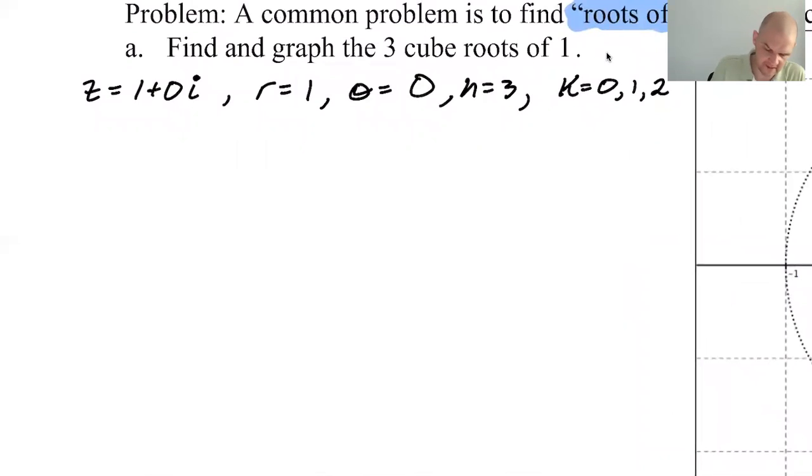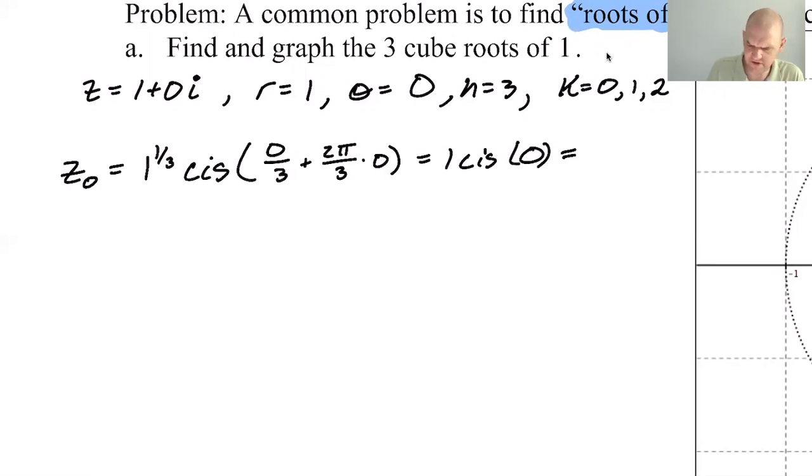So we're going to find the cube roots. So let's say z sub 0 is going to be 1 to the 1/3, which is just 1. And then cis, so it's 0 over 3, which is obviously 0. So that's 0, that's theta over n, so 0 over 3, plus 2π over 3, that's 2π over n, times 0. So this is actually just 1, cis 0, which we know what that is. That's just 1.